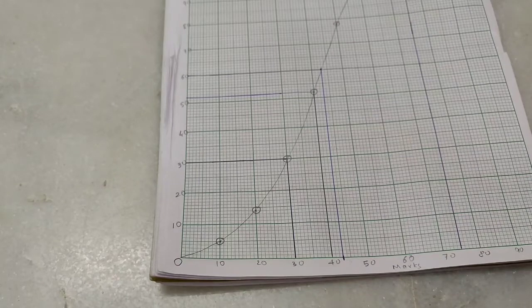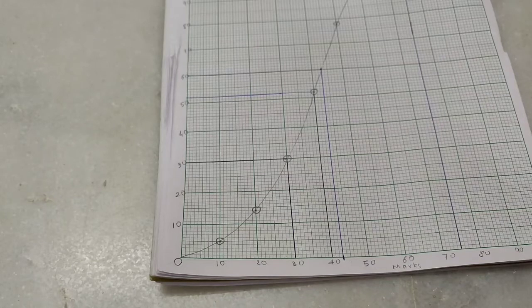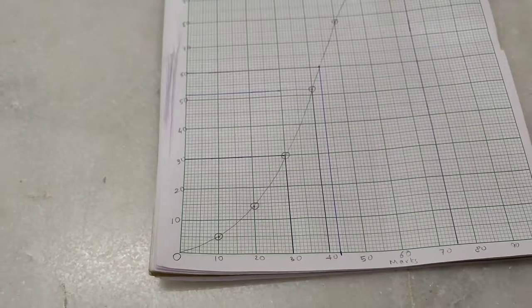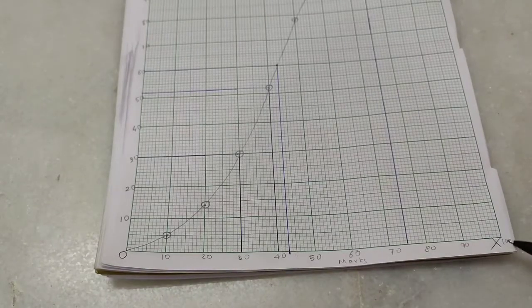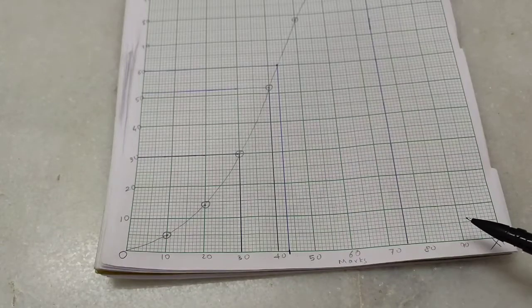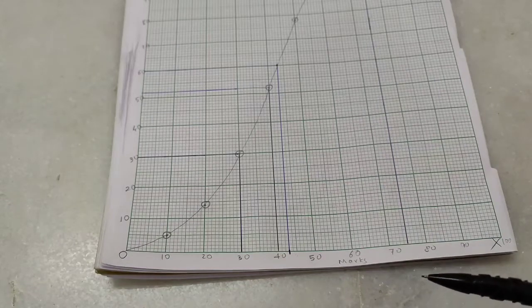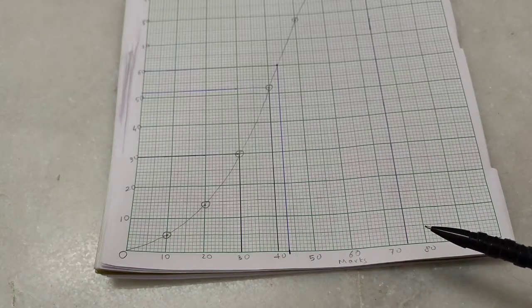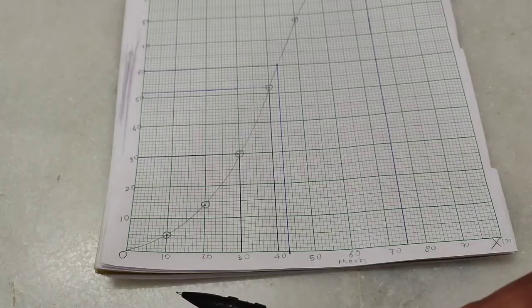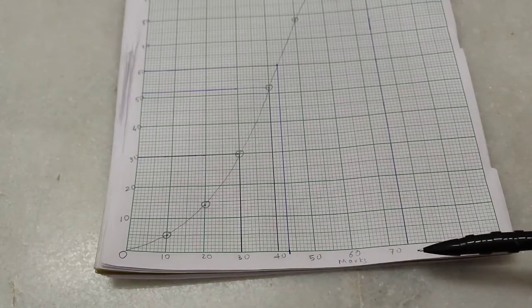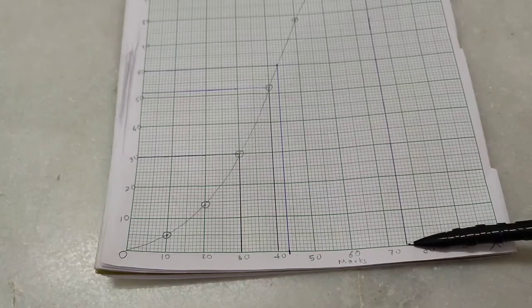Now, roman number two says find the number of students who obtained more than 75 percent marks in the test. Here the marks was of 100. The test was of 100 marks, so 75 percent would be 75 marks, of course. So here they have asked for the number of students who obtained more than that. So since they're asking for the number of students, we will get the answer from the y-axis now, and we'll have to start from the x-axis.